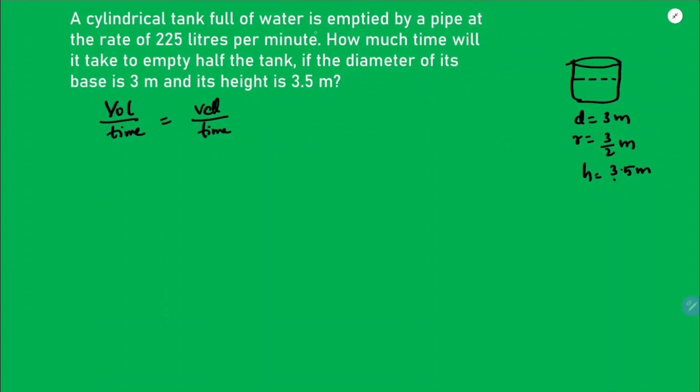The water is flowing at a rate of 225 liters, so I'll write 225 into 1000, because one liter is 1000 centimeter cube, by one minute.